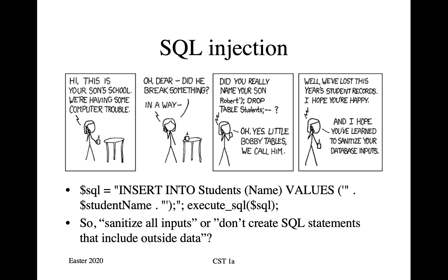Look at the XKCD cartoon: 'Hi, this is your son's school. We're having some computer trouble.' 'Oh dear, did he break something?' 'In a way. Did you really name your son Robert, close bracket, semicolon, drop table, student, semicolon?' 'Oh yes, little Bobby Tables we call him.' 'Well, we've lost this year's student records. I hope you're happy.'